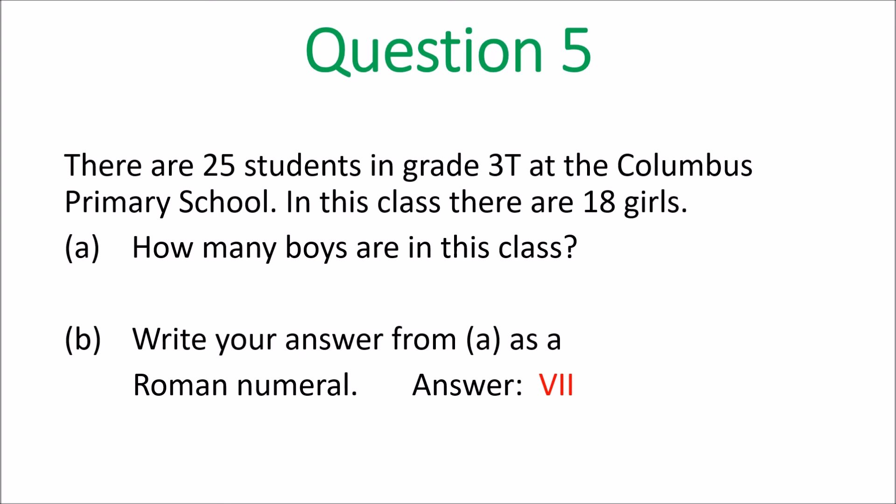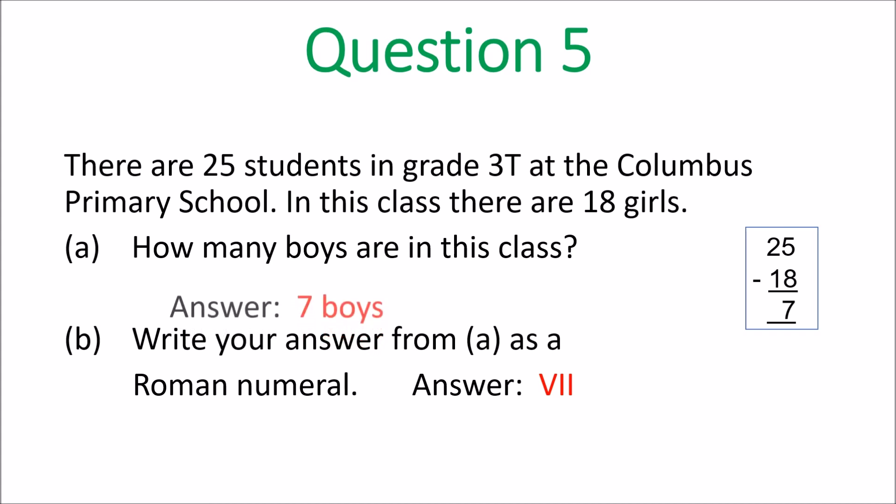Question 5. There are 25 students in Grade 3 at Columbus Primary School, and 18 are girls. You subtract 25 take away 18 to get 7 boys. For part B, write 7 as a Roman numeral: V-I-I. That's 7.